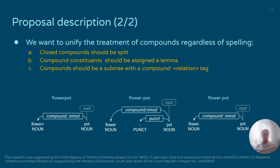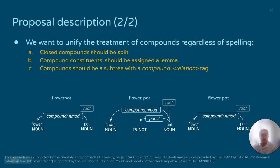The proposed annotation scheme also allows us to handle the flowerpot situation without losing any information. A plus sign indicates that the compound word was originally spelled together, and in all three spelling variants we get the compound and nmod relation, which is analogous to how other languages handle their noun-noun dependencies. At the same time we respect the view that all of these structures are compounds, and we do not face the problem of compounds being spelled together.